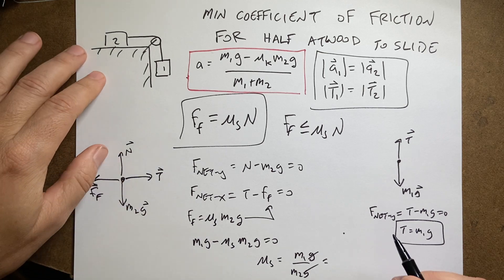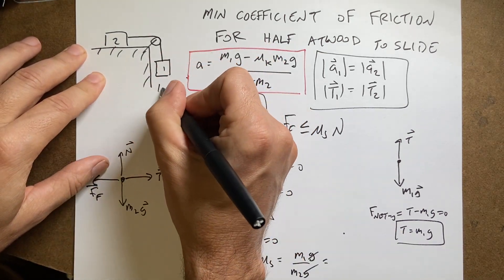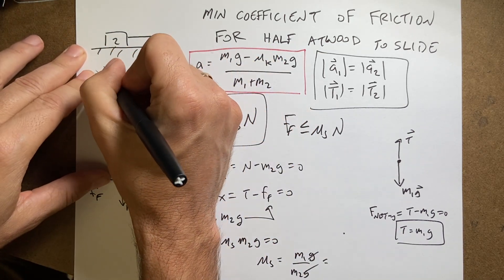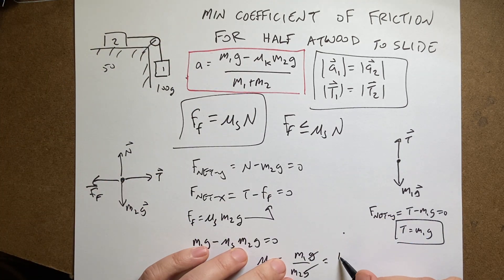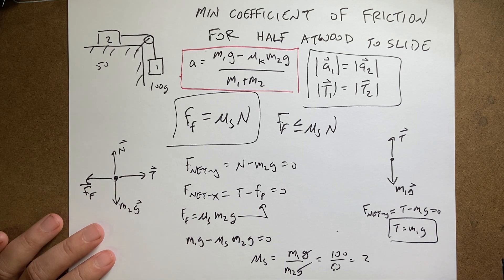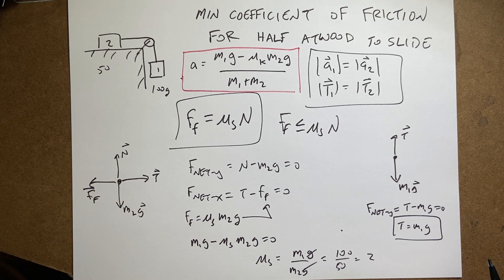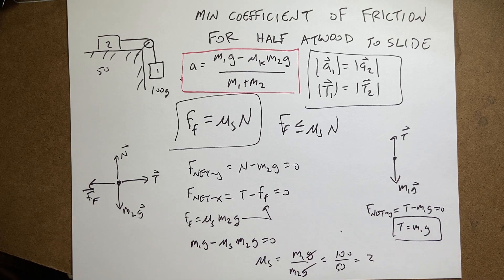So let's say I've been using this as 100 grams and this is 50 grams. If that's the case, it would be 100 over 50 equals 2. That would be the minimum coefficient of friction to make it not move. And that's way too high.